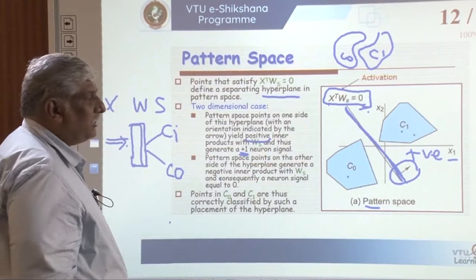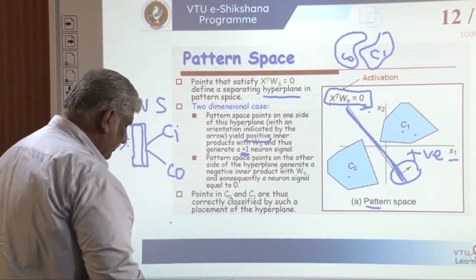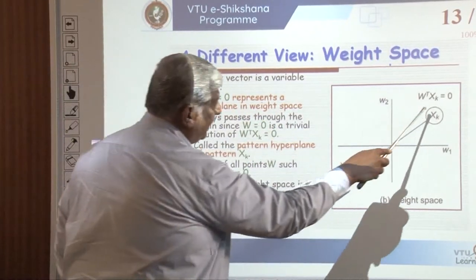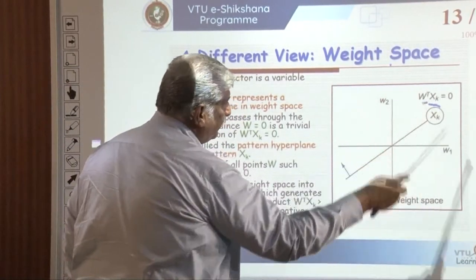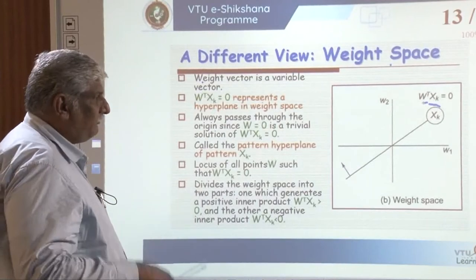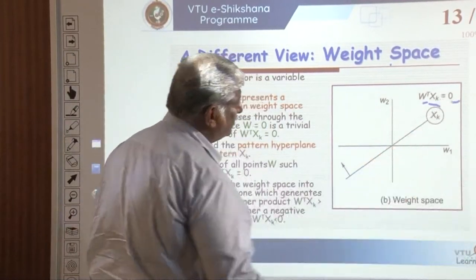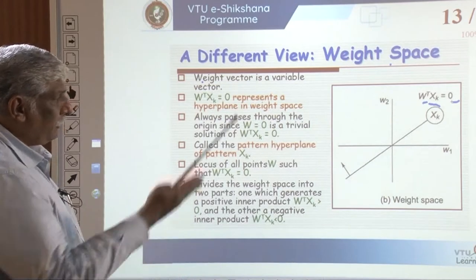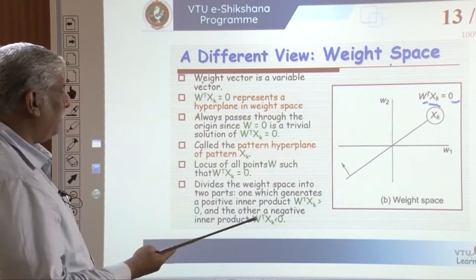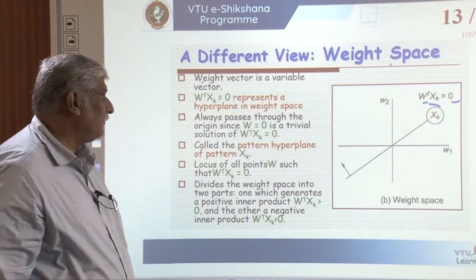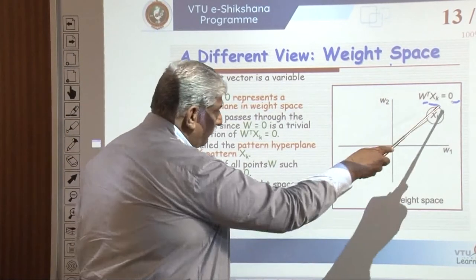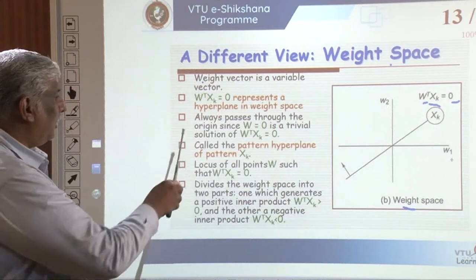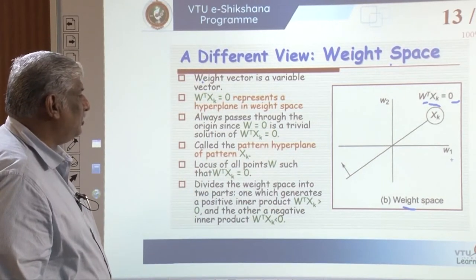Here, X is the input and W-transpose is the transpose of the weight vector. It is equated to zero because it differentiates positive and negative values — that forms the midpoint. W-transpose times X_k equals zero represents a hyperplane in the weight space, with axes W1 and W2, and always passes through the origin since W equals zero is a trivial solution. This hyperplane is called the pattern hyperplane of pattern X_k.